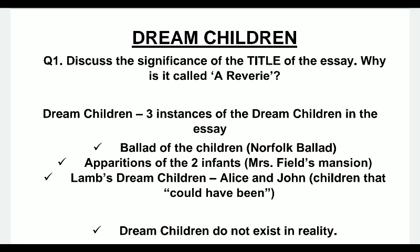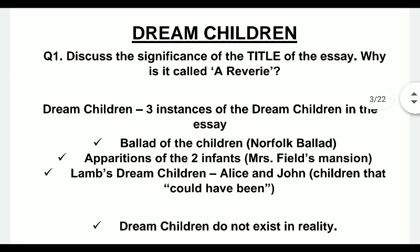The first question is: discuss the significance of the title of the essay. Why is it called a Reverie? If you look at the title Dream Children: A Reverie, there are actually two specific parts. Most of you will focus on Dream Children, but it is also important not to leave out the Reverie part, because that also plays a very important role in a question asking specifically about the title. We'll discuss both parts separately.